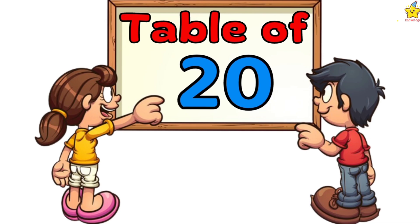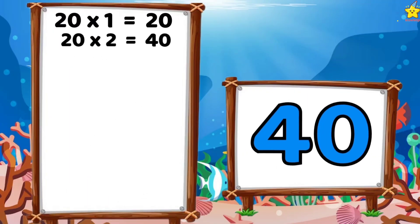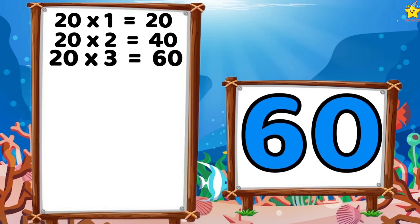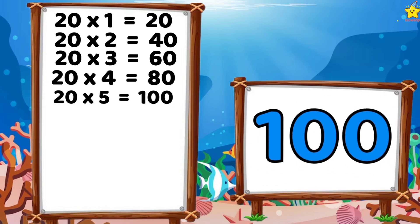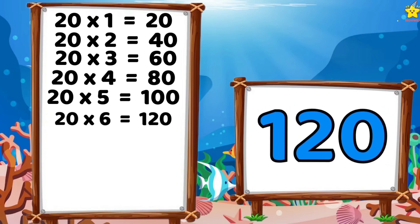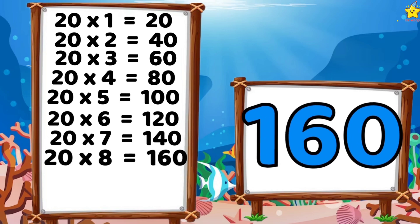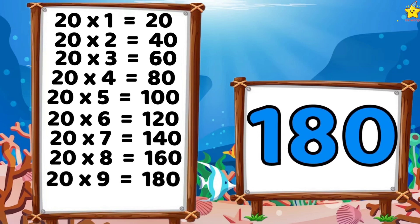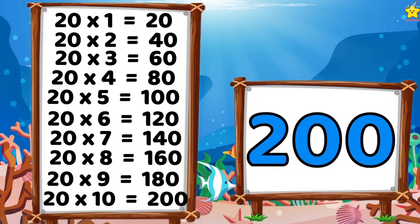Table of 20. 20 ones are 20. 20 twos are 40. 20 threes are 60. 20 fours are 80. 20 fives are 100. 20 sixes are 120. 20 sevens are 140. 20 eights are 160. 20 nines are 180. 20 tens are 200.